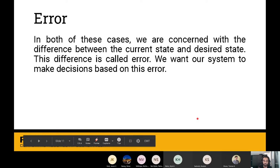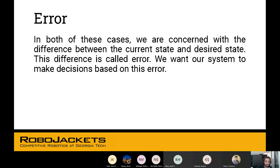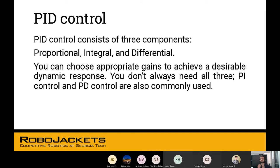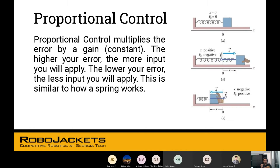What is this error we're talking about? Error is the difference between the current state and the desired state. We want our system to make decisions based on this error. One way to do that is using PID control. PID control consists of three components: proportional, integral and differential. You will choose gains which are constant values to achieve desirable dynamic response. You choose a P gain, an I gain and a D gain. You don't always need all three. PI control and PD control are also commonly used.